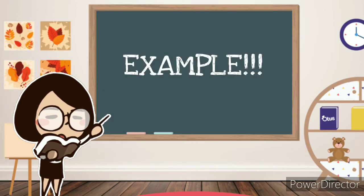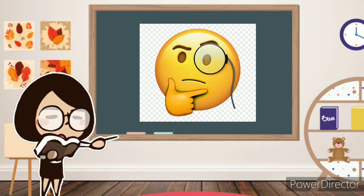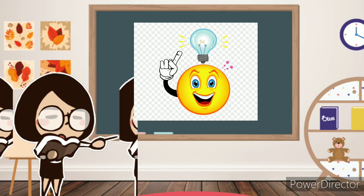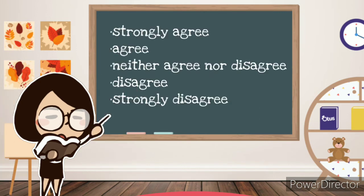a researcher interested in measuring prejudice against women could use a Likert scale to do so. The researcher would first create a series of statements reflecting prejudice ideas, each with response categories of strongly agree, agree, neither agree nor disagree, disagree, and strongly disagree.